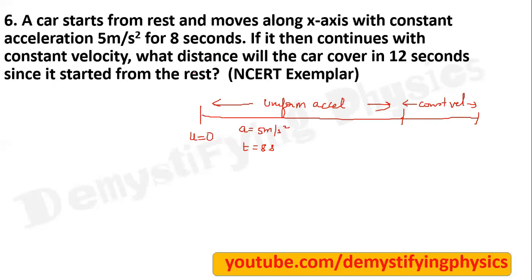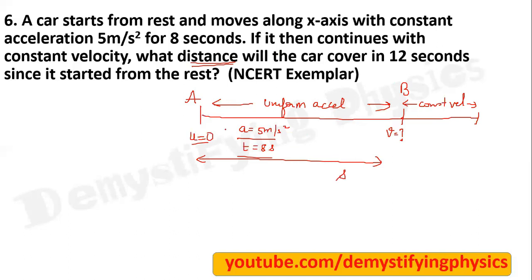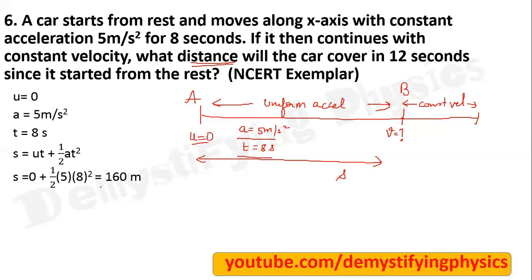From A to B it is uniformly accelerated motion. So u is 0, a is 5 meter per second square. You can find the velocity for this portion. You have been asked distance for 12 seconds, so first you find distance for 8 seconds. Use the second equation of motion to find distance. U is 0, a is 5, t is 8 seconds. Put all the values and you will get s equal to 160 meter.